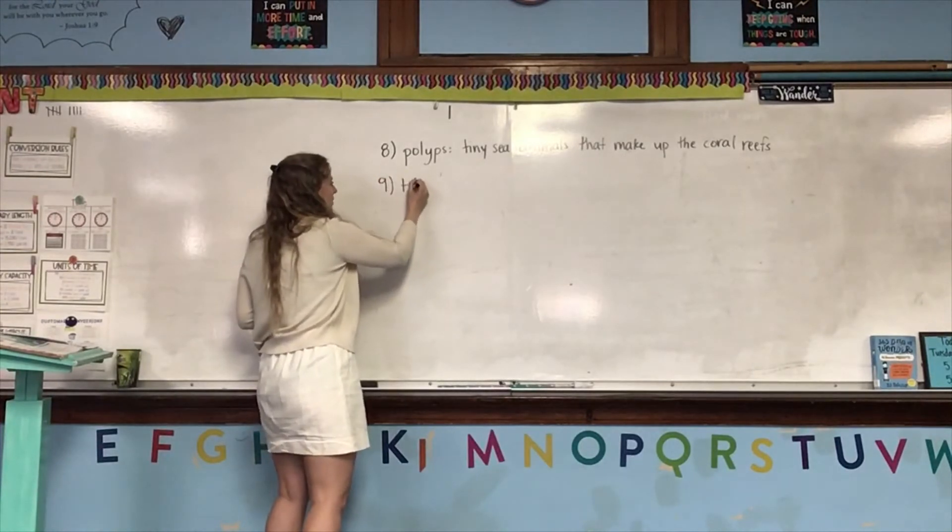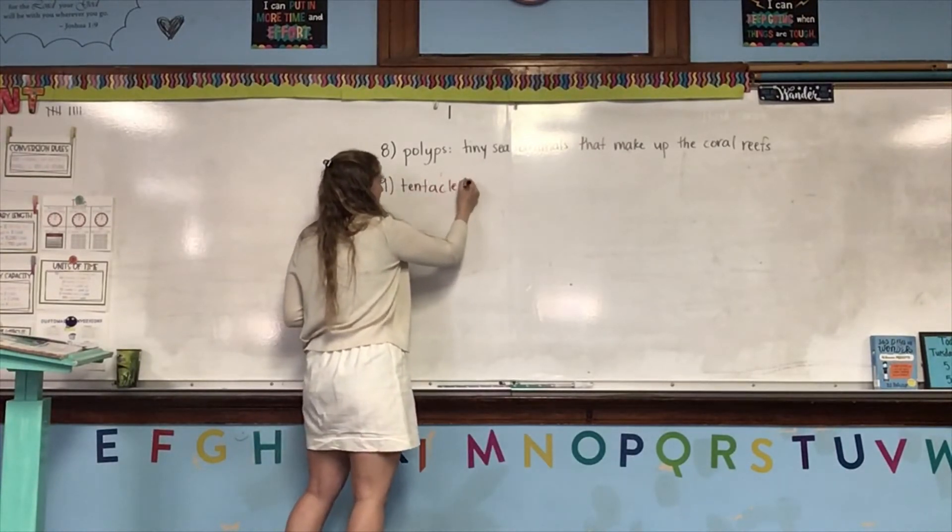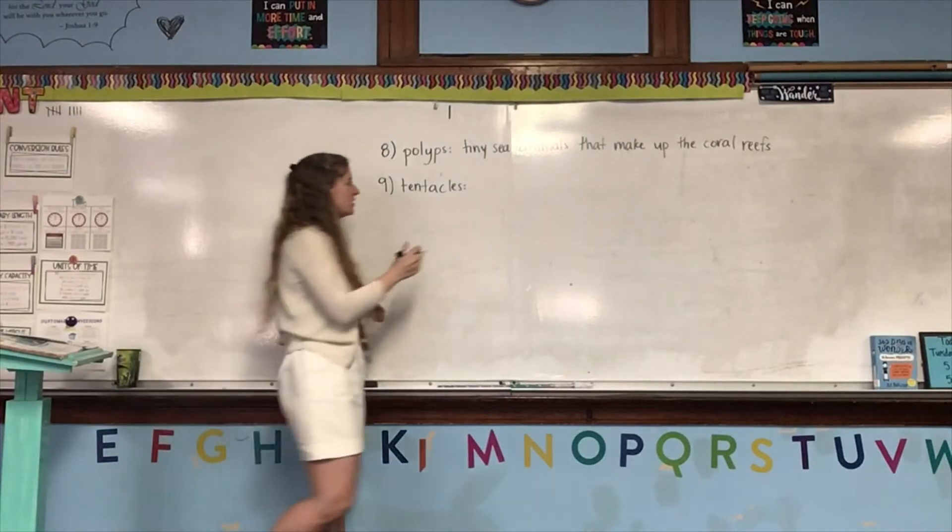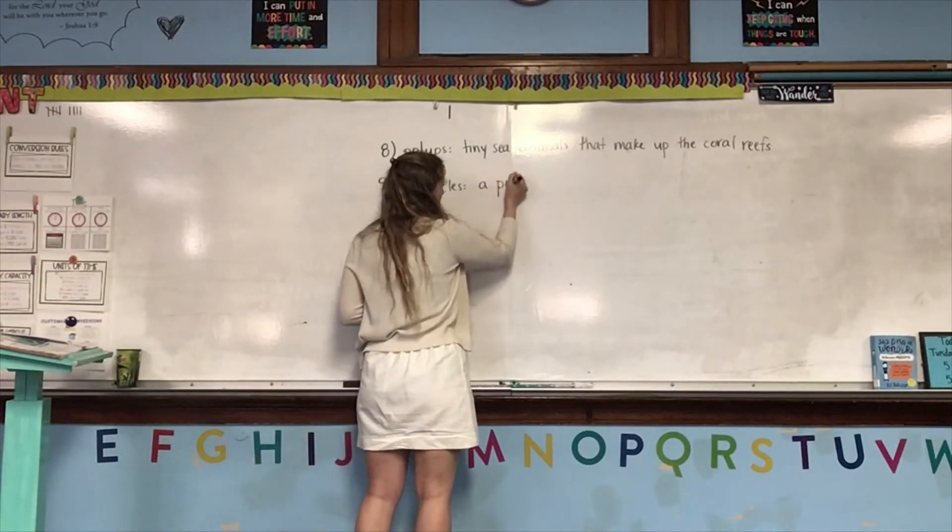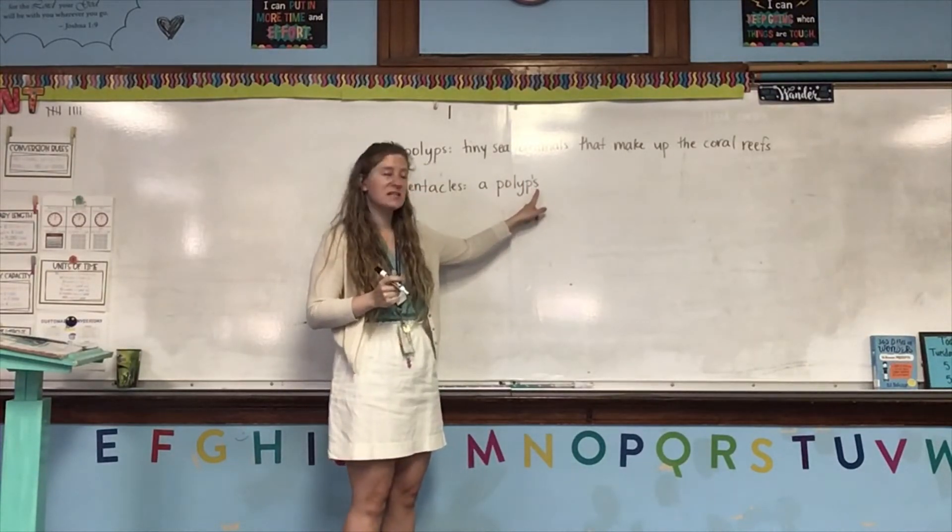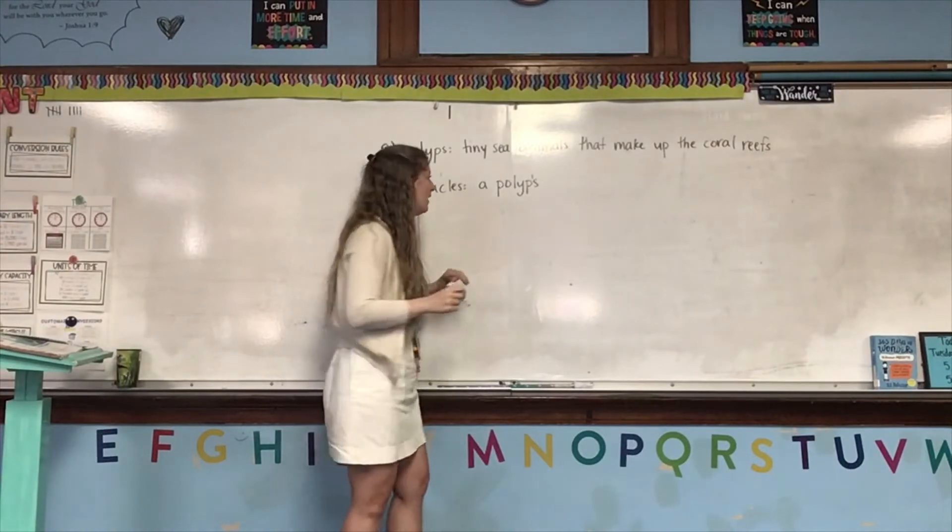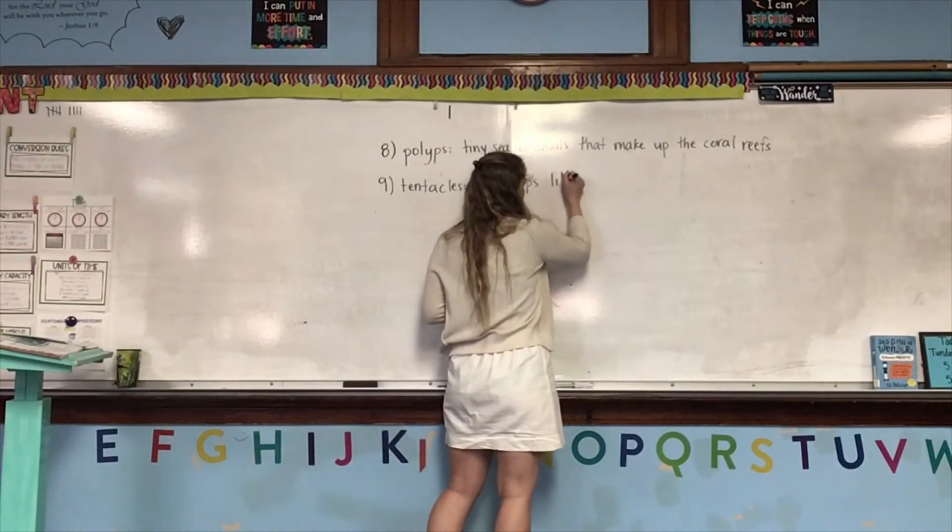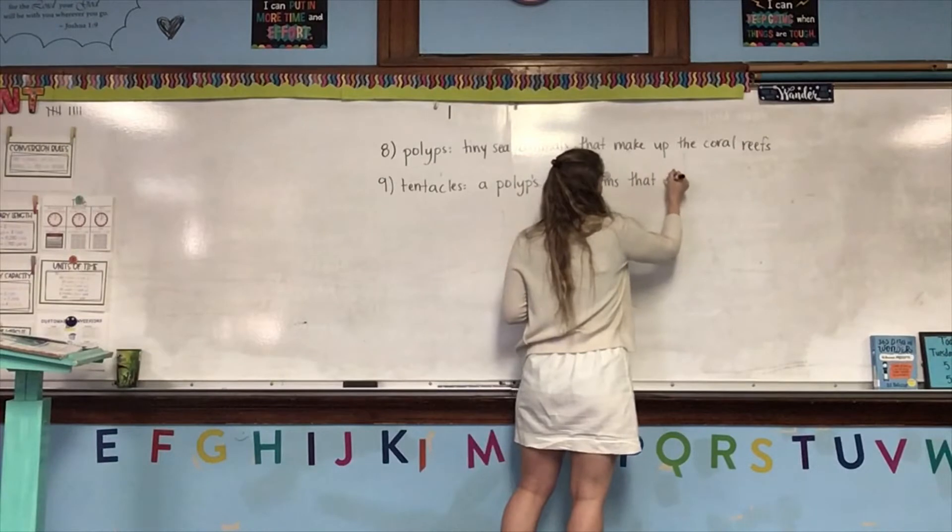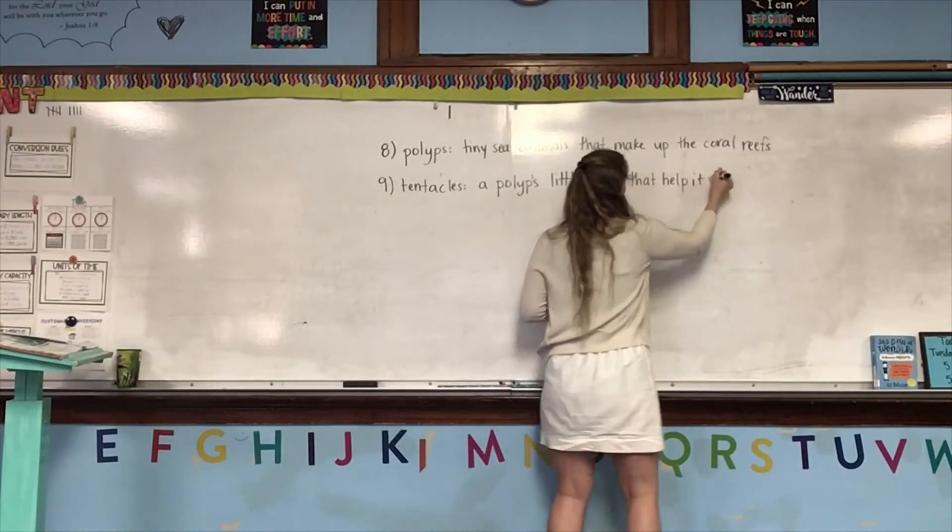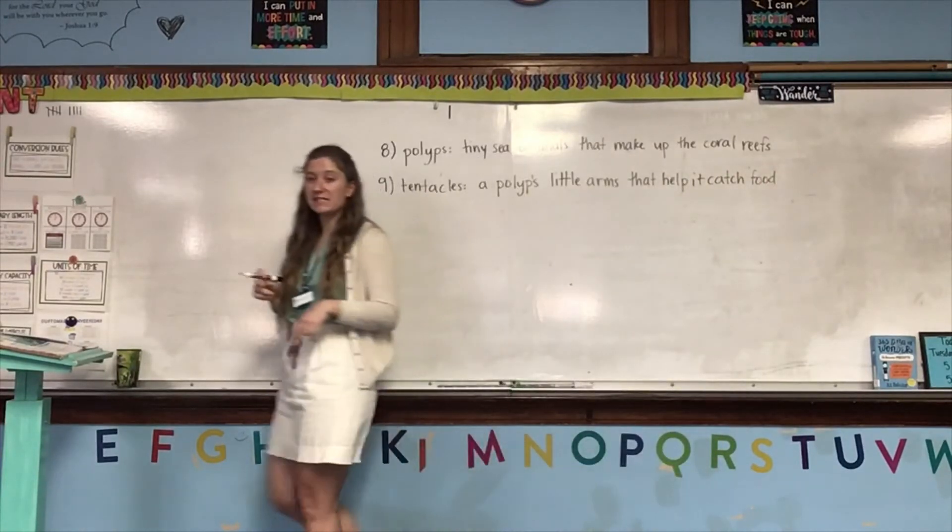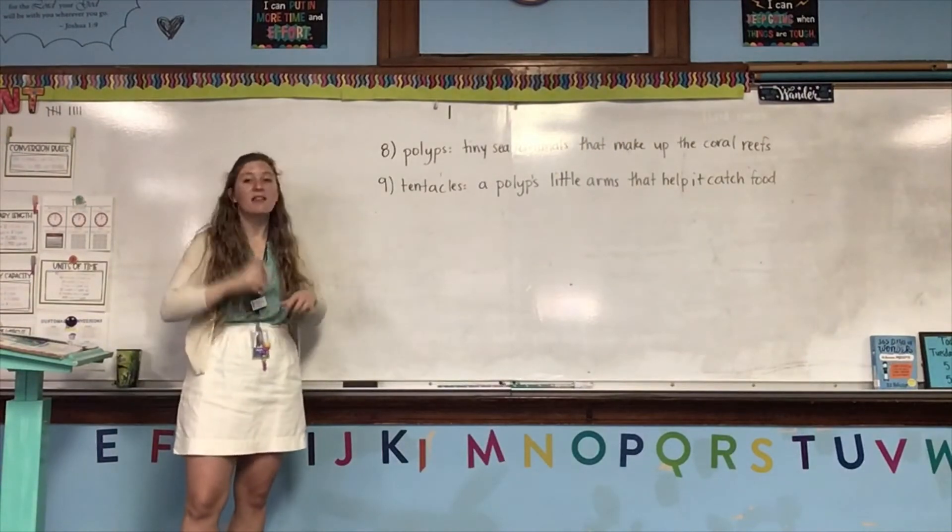Number nine is the word tentacles, T-E-N-T-A-C-L-E-S. And tentacles are a polyp's—notice that I have apostrophe S. That means that whatever comes next is going to belong to the polyp. So, a polyp's little arms that help it catch food. So, this polyp that makes up the coral reef, these polyps, they have tentacles that help them catch food.